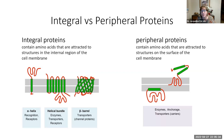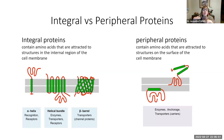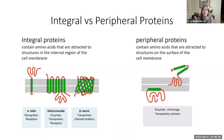Integral proteins are the transmembrane proteins — their amino acids are attracted to the internal region of the cell membrane, so they go the entire thickness of the cell membrane. Peripheral proteins, by contrast, have amino acids attracted to structures on the surface of the cell membrane, either the external or internal surface. Both types can be enzymes, and both types can be transporters.